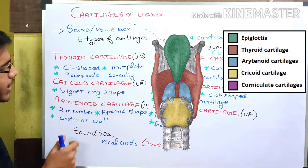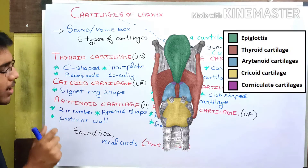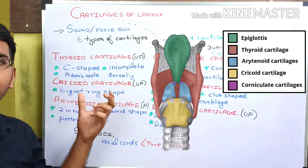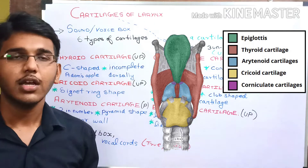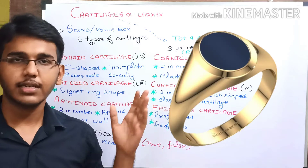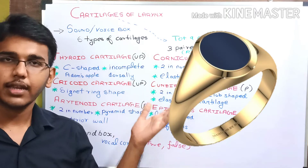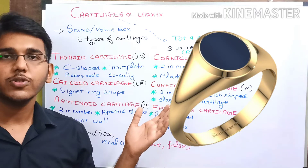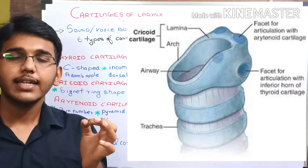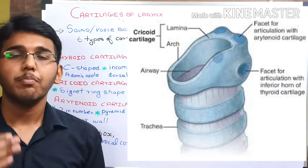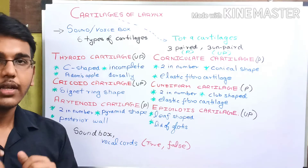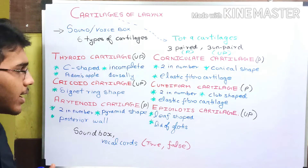Next, we have the cricoid cartilage. The cricoid cartilage is a signet ring-shaped cartilage. You can see the image of the signet ring on screen along with the image of the cricoid cartilage. It is present beneath the thyroid cartilage.